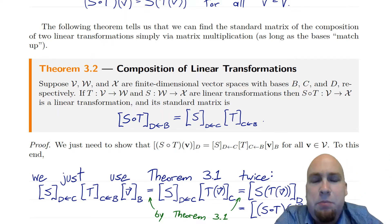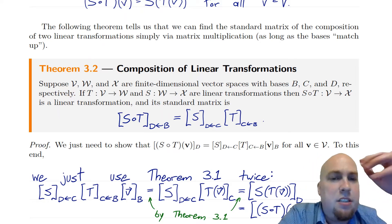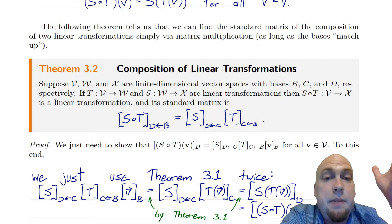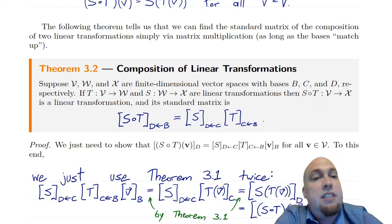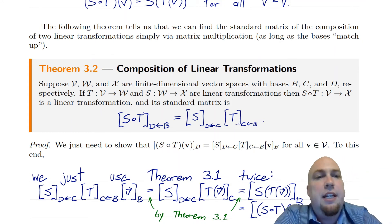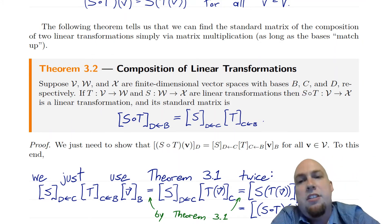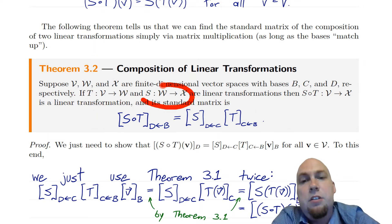A bit more formally, suppose you have three vector spaces V, W, and X — all finite dimensional, so we have standard matrices. To have standard matrices, you need to fix bases of those vector spaces, so you have bases b, c, and d. Suppose you have linear transformations where t goes from V to W and s goes from W to X.